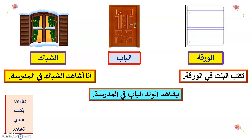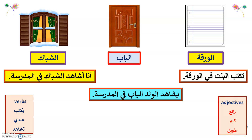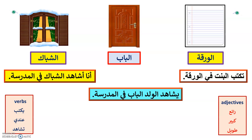Now you can also use some adjectives. For example, 'ra'i' means 'wonderful.' Albab ra'i — the door is wonderful. Alshubak ra'i — the window is wonderful. Or: Ana ushahid albab ra'i wa jamil wa kabir — I see a wonderful, beautiful, and big door. Also 'ta'wil' means 'tall': albab ta'wil — the door is tall.